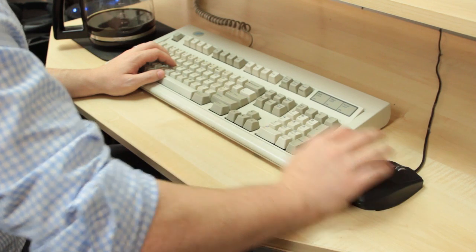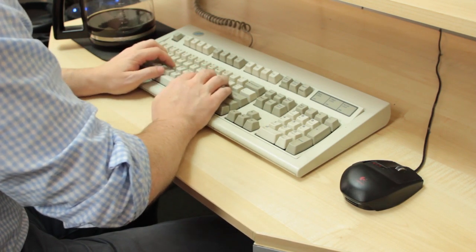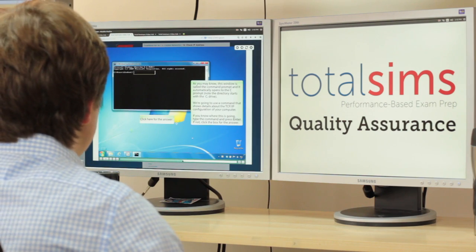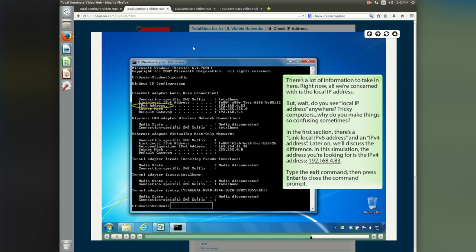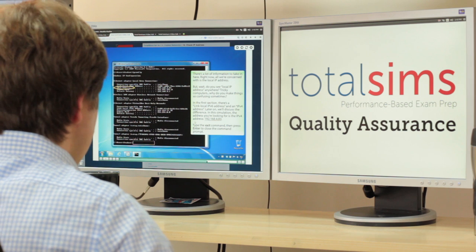Third are my Total Sims. There's a number of questions on the Network+ that are designed to act as simulations, so they're really looking at how you perform on certain situations. So these types of performance-based questions really require a separate tool, and that's where my Total Sims come into play. The Total Sims are an online product. You just go through and they give you lots of cool simulations and situations just like you'll see on the Network+.